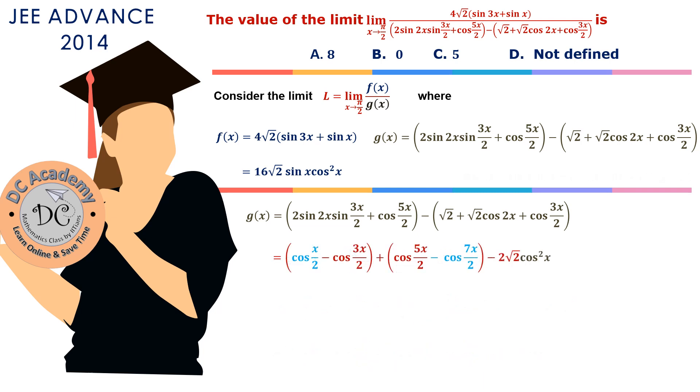Now we recall the formula cos A - cos B = -2 sin((A+B)/2) sin((A-B)/2). Applying this formula, we get 2 sin x sin(x/2) + 2 sin 3x sin(x/2) - 2√2 cos² x. This is a very straightforward calculation, but we have to be concentrated. If we make a mistake, we are gone.